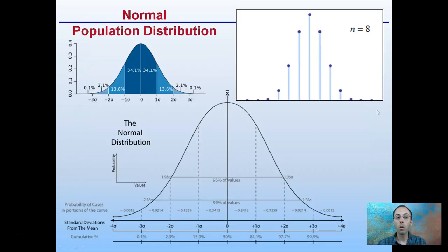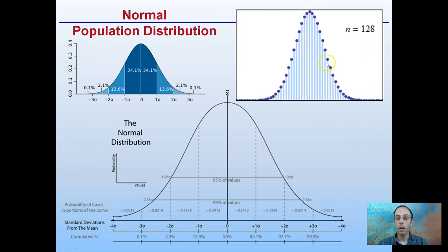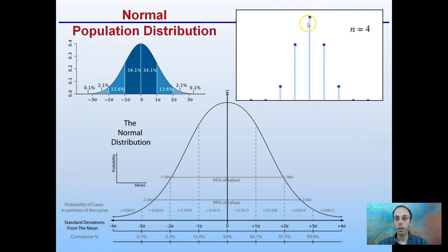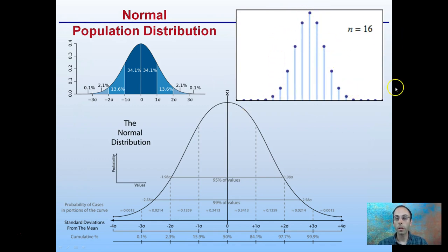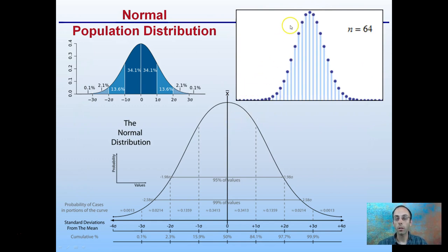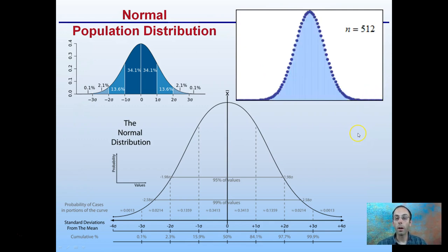First off, we've got to look at a normal population distribution. We see that as we increase n, or the number of individuals, we see a more defined bell curve, with the normal average being right here in the center. With n of 4, we see it increasing; a little more defined at 16, to 32, to 64. Now we're really getting a sense of this normal distribution curve, often referred to as the bell curve.